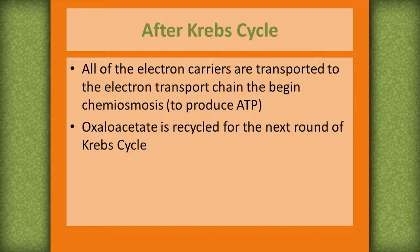After the Krebs cycle, all the electron carriers are transported to the electron transport chain to begin chemiosmosis in order to produce more ATP. Oxaloacetate is recycled for the next round of the Krebs cycle.